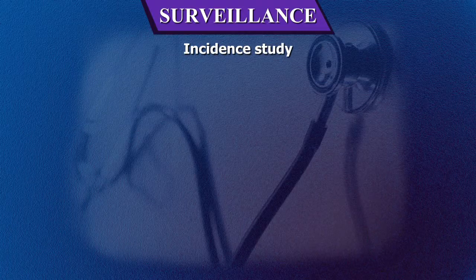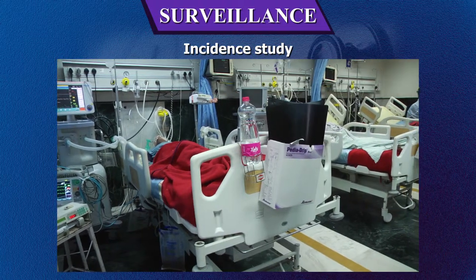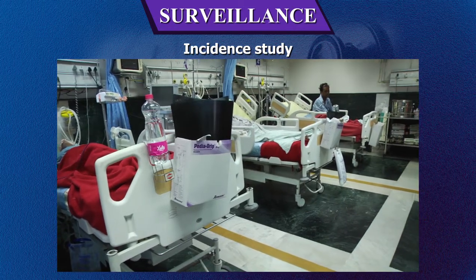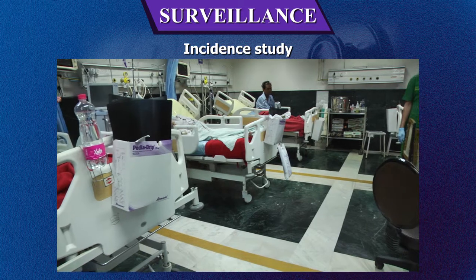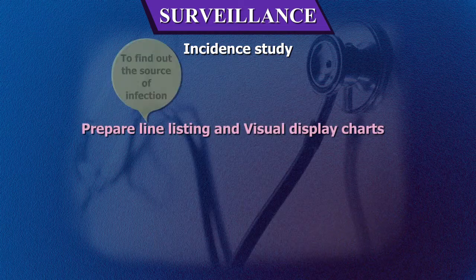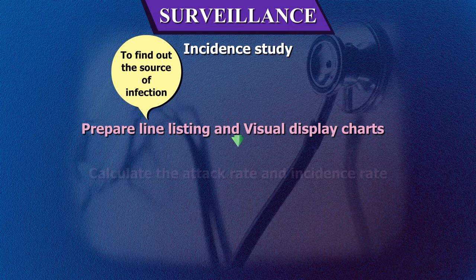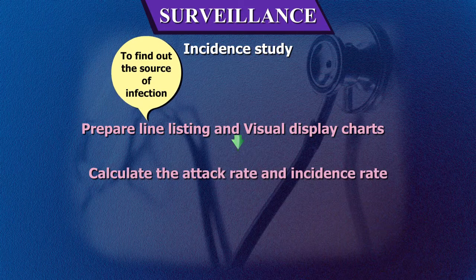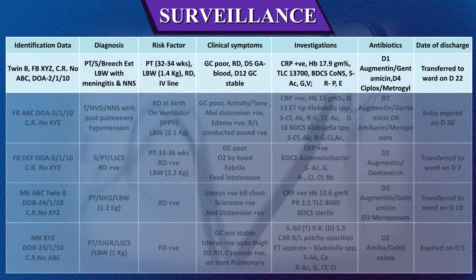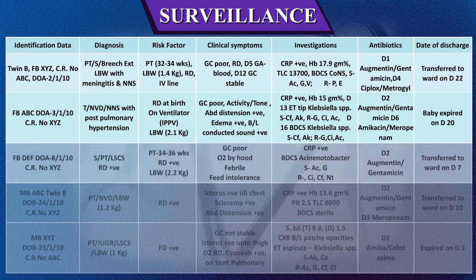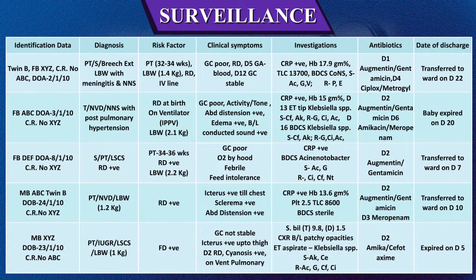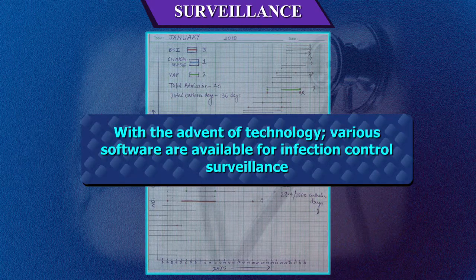For the incident study, the infection control team must visit high-risk areas daily, collect data regarding hospital-acquired infection cases, and maintain records of all cases of possible healthcare-associated infections. The infection control nurse must prepare line listing and graphs every month and calculate the attack rate and incidence rate. An example of line listing for a month includes columns for serial number, identification data, diagnosis, risk factor, clinical symptoms, investigations, antibiotics, and date of discharge.